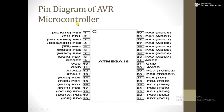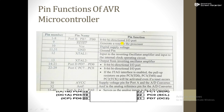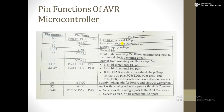This is the pin diagram of the AVR microcontroller. It has 40 pins. Pins 1 to 8 are Port B7 to Port B0 — an 8-bit bi-directional input/output port. Pin 9 is used as the reset pin. Pin 10 is the digital supply voltage. Pins 11 and 31 are the ground pins. Pin 12 is the crystal input to the inverting oscillator amplifier, and pin 13 is the crystal output from the inverting oscillator amplifier.